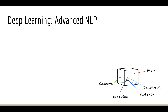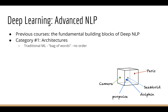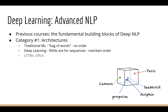In previous courses you learned about some of the fundamental building blocks of Deep NLP. These can be broken up into two major categories. The first is new architectures. In traditional machine learning you treat sentences and documents as a bag of words, meaning you'd lose all information about order. With deep learning we use RNNs, or recurrent neural networks, which let you take into account order as well. And LSTMs and GRUs have become very popular in recent years.